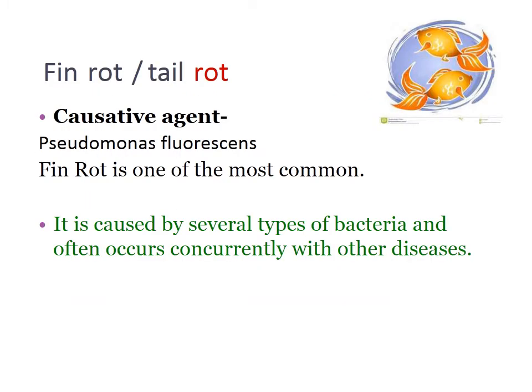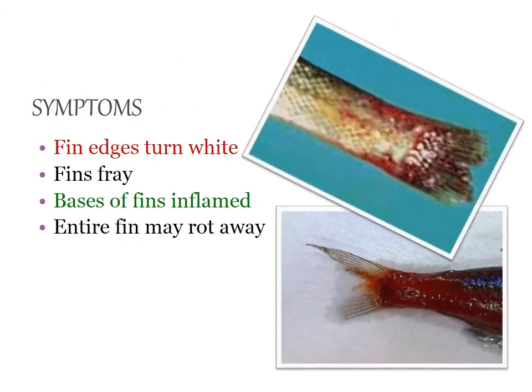Fin rot or tail rot: the causative agent is Pseudomonas fluorescens. Fin rot is one of the most common fish diseases, caused by several types of bacteria, and often occurs concurrently with other diseases. Symptoms include fin edges turning white, fins fraying or showing rupture in pieces.